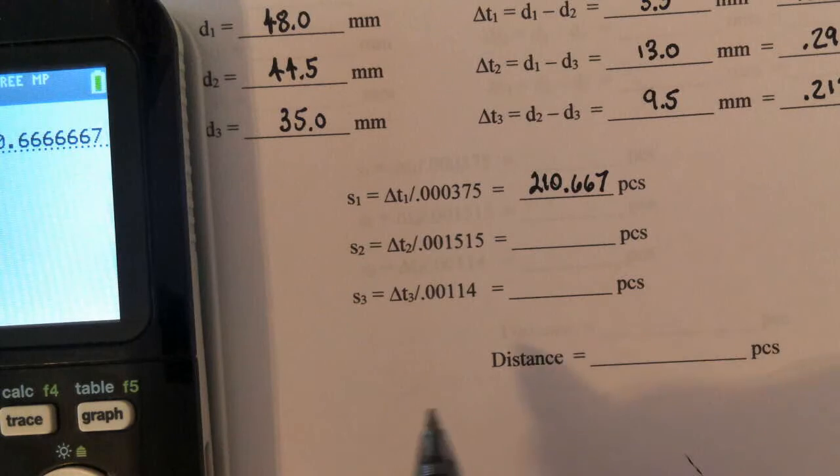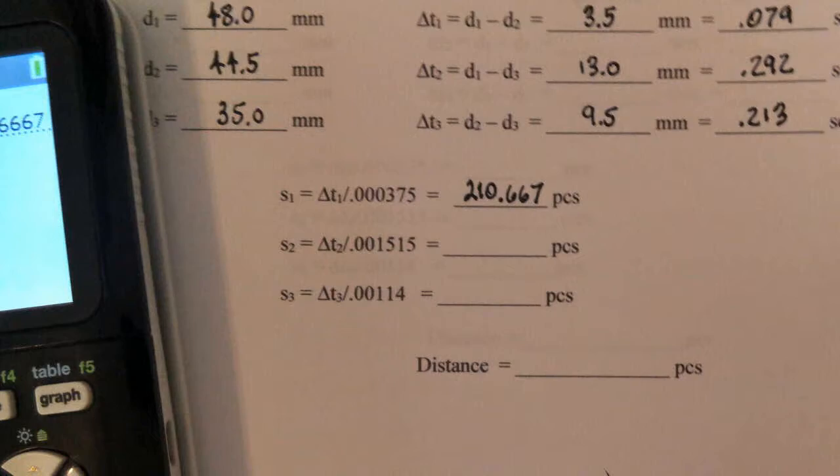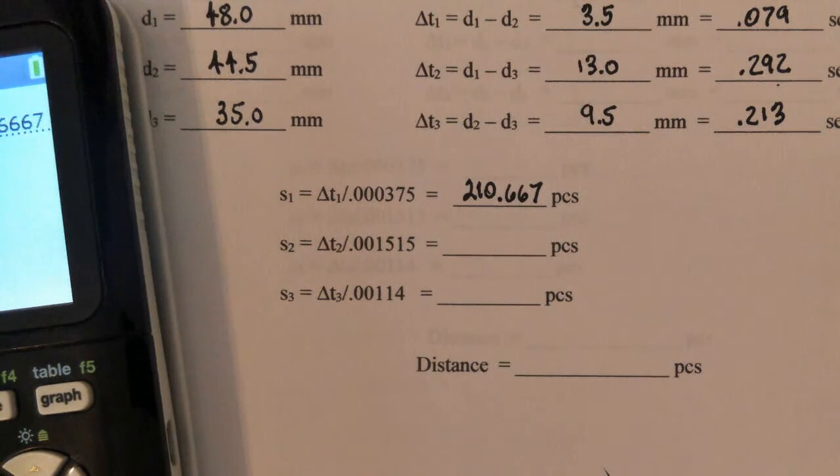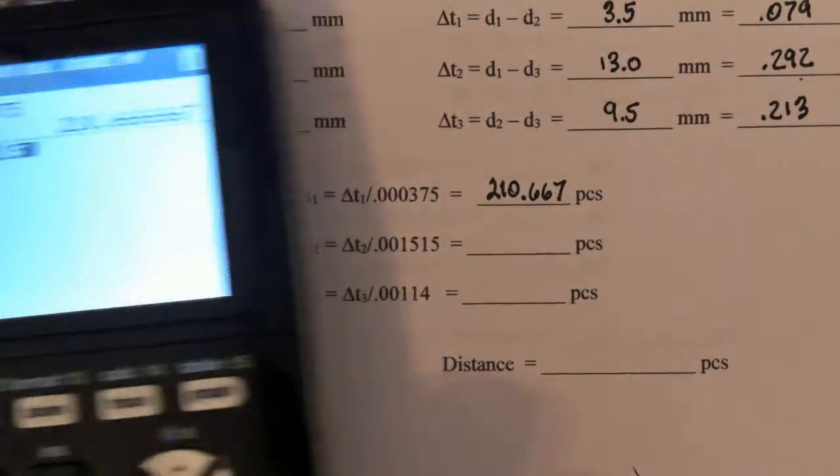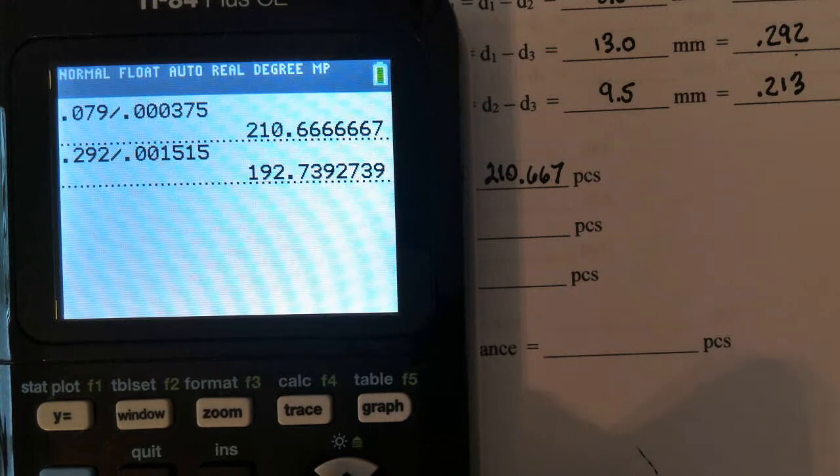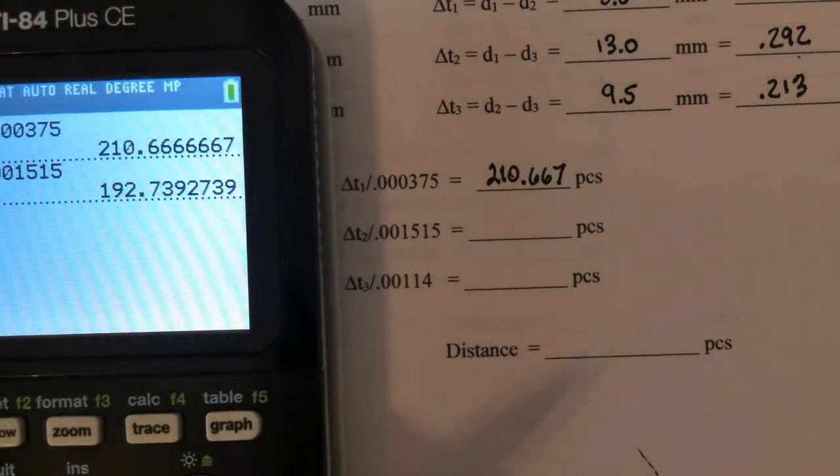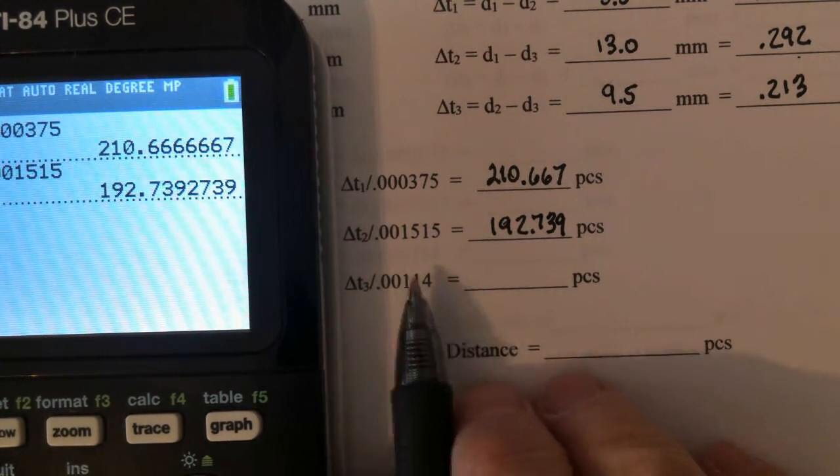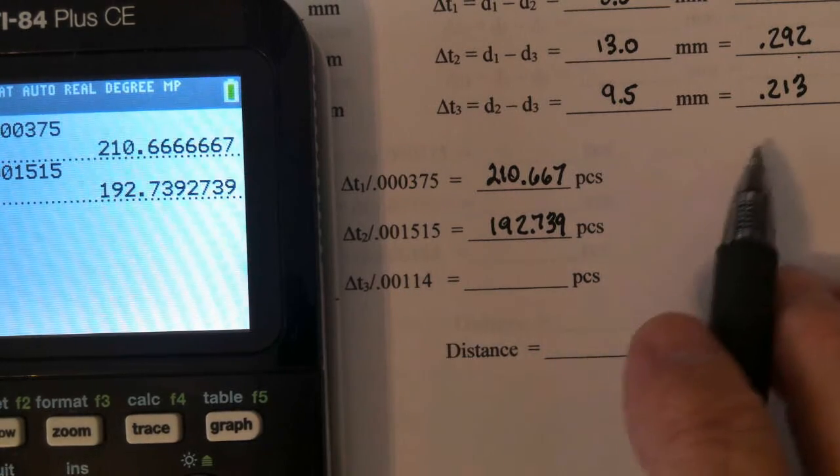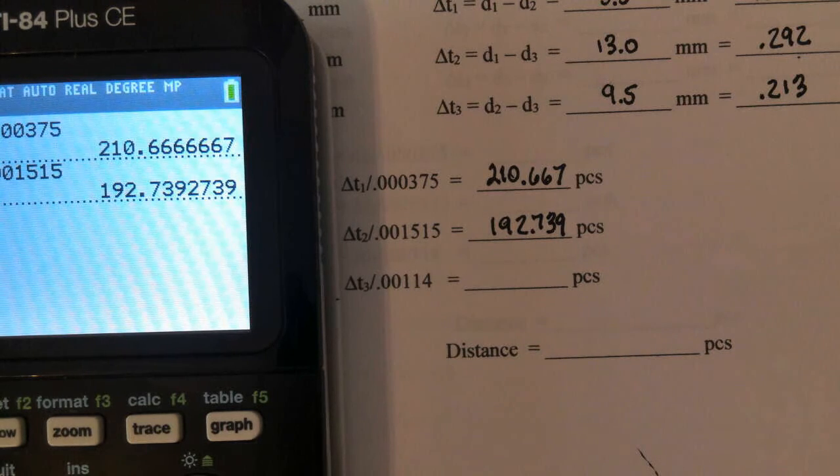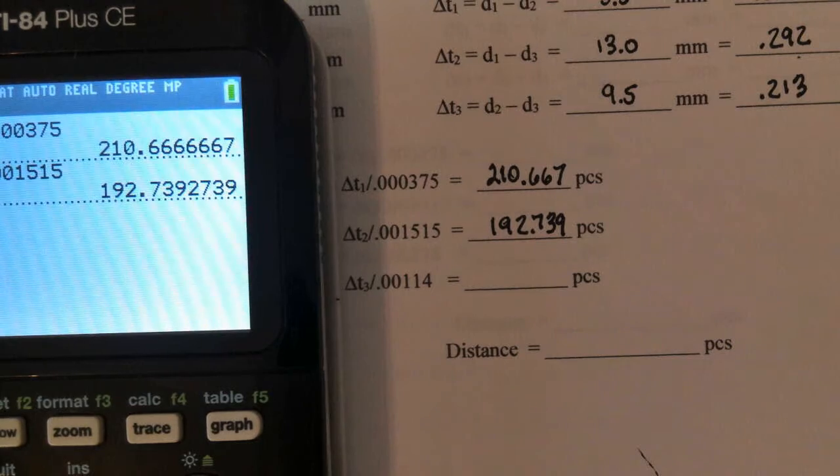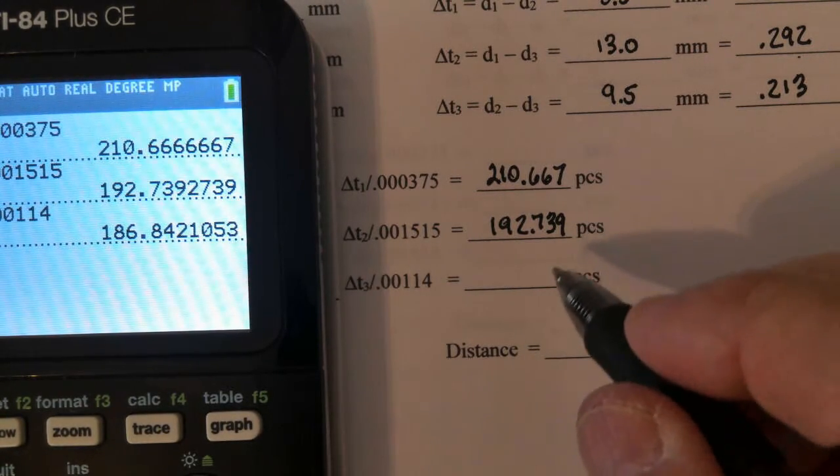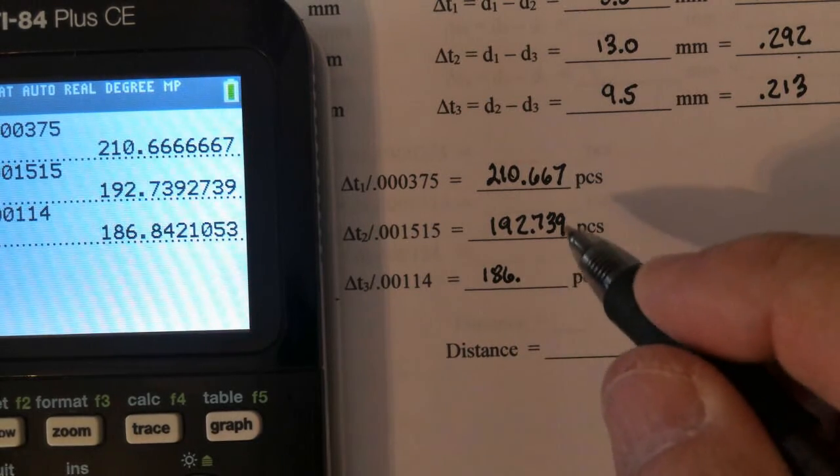We can get another value for the distance by taking the change in time delta T2, that's 0.292, and dividing it by 0.001515. That's 192.739. And the third one, take delta T3, divide by 0.00114. 0.213 divided by 0.00114 is 186.842.